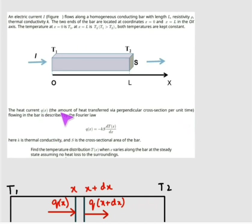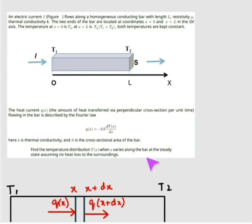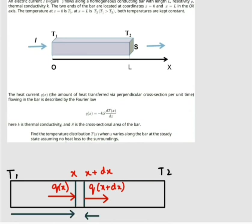The heat current Q — that is, the amount of heat transferred by a perpendicular cross section per unit time — flowing in the bar is described by the Fourier law: Q = -K·s·(dT/dx). We are going to find the temperature distribution T as a function of x along the bar at steady state, assuming no heat loss to the surroundings.